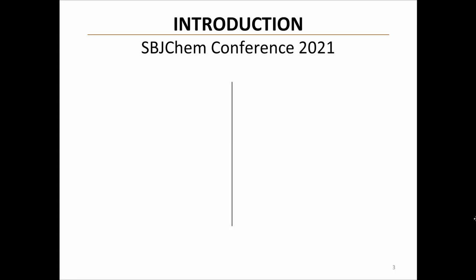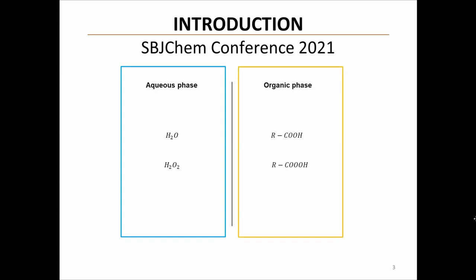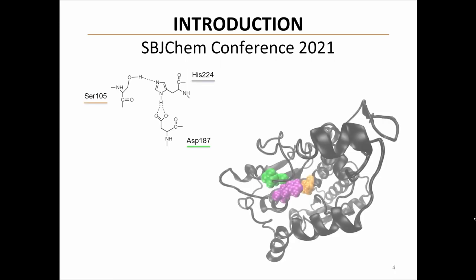These systems are conformed by two liquid phases: an aqueous phase that contains the polar substrates of peracidation — the hydrogen peroxide — and another of organic nature that contains the carboxylic acid, the peracid, and the substrates of epoxidation. The catalytic activity of this enzyme is due to the coordinated action of three amino acids: serine, histidine, and aspartate.